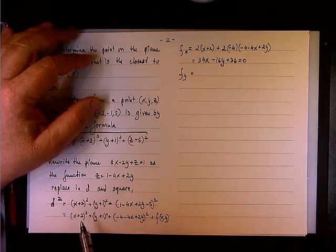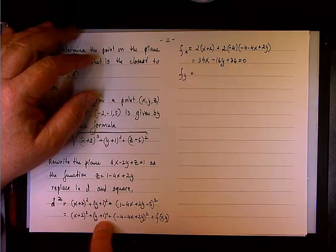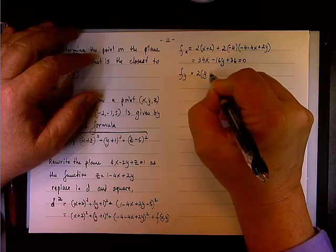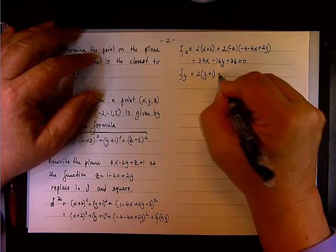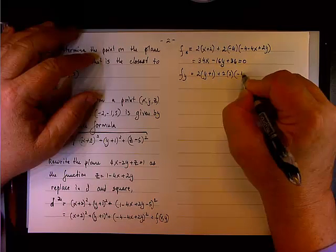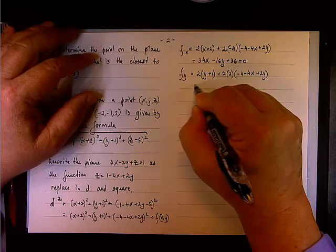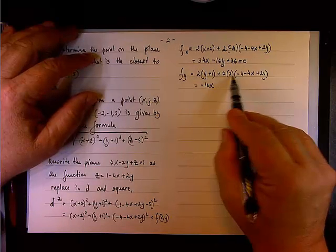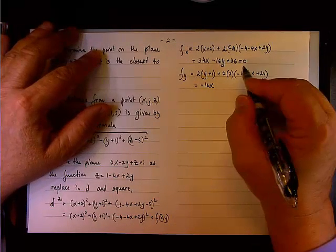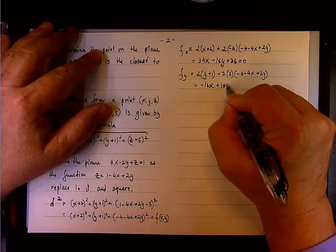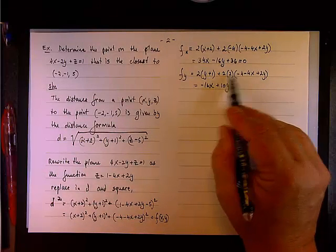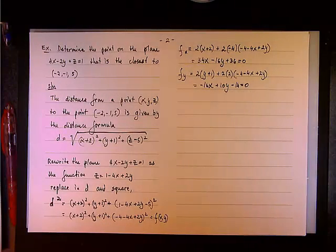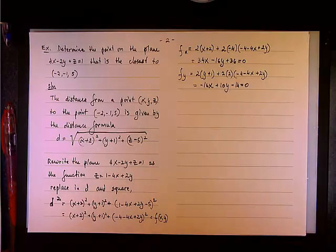Now let's find the derivative with respect to y. We have 2 times (y plus 1) plus 2 times 2 times (negative 4x plus 2y minus 4). In terms of x we have negative 16x. In terms of y we have 2 plus 8, giving us 10y total. For the constants we have 2 minus 16, which is negative 14. And we need that to equal 0.